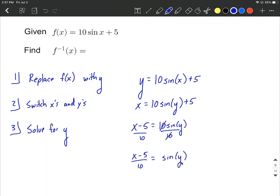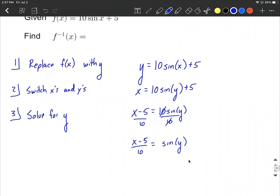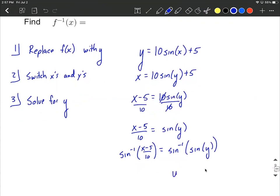All right. To get y out from inside of the sine function, the next step is we want to apply a sine inverse function to both sides. In applying that inverse function, that's going to counteract the sine function, the original sine function over here on the right hand side, thus giving us y on one side all by itself. So y equals sine inverse of x minus 5 over 10.